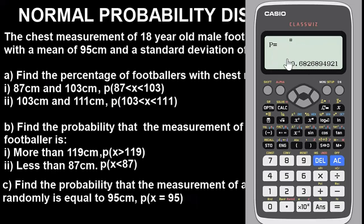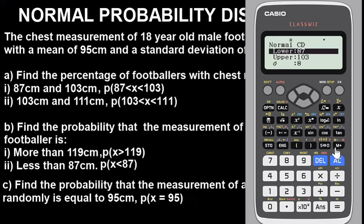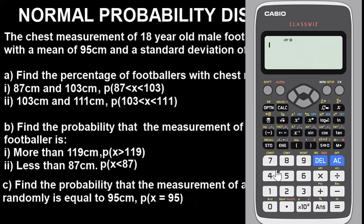Our mean is 95 cm, so enter 95, then press OK to get the value. The value is 0.6827. But remember the question asks for a percentage, so to convert this to a percentage, go back out and press Answer times 100. The answer as a percentage is 68.26 percent. That is the answer to Part A(i).